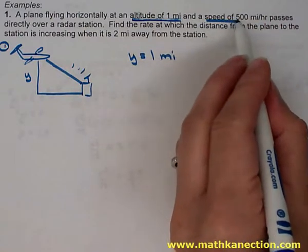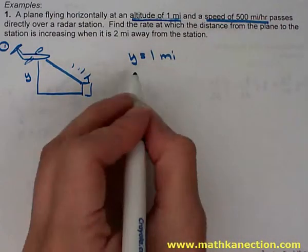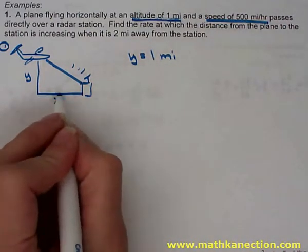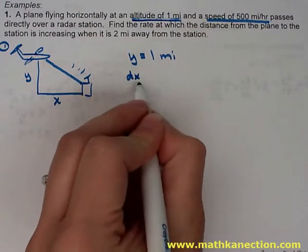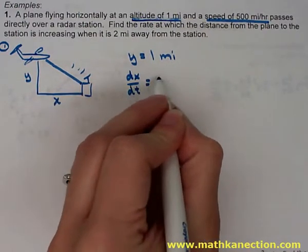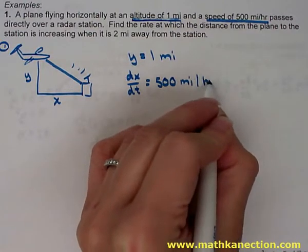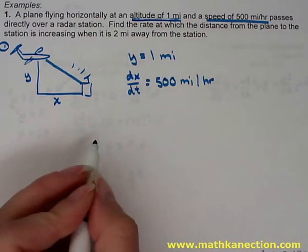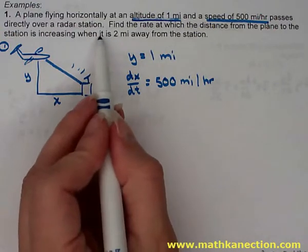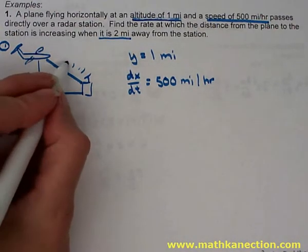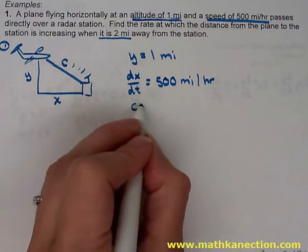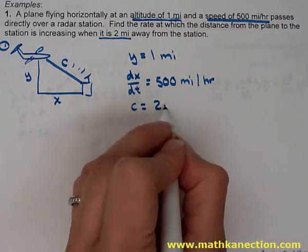Another given information is the plane is flying at a speed of 500 miles per hour. The direction in which the plane is going will be called x. So dx/dt, the rate at which the plane is flying, is 500 miles per hour. Another given information is that the plane is two miles away from the station. So the value of c, the plane from the station, is equal to two miles.